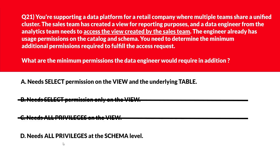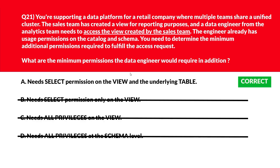Let's move to option D. D says needs all privileges at the schema level. All privileges at the schema level grants broad control but doesn't ensure access to specific tables used in the view — therefore incorrect. Option A is the right answer.